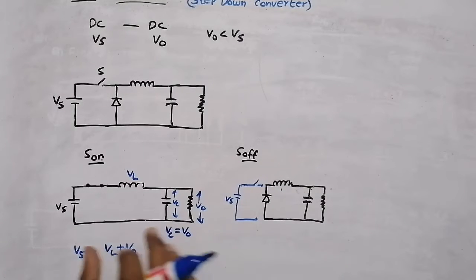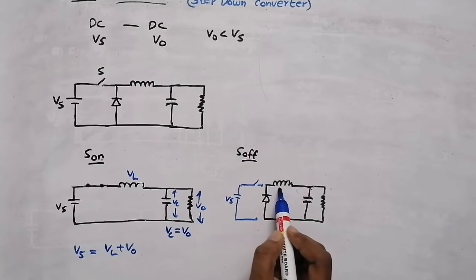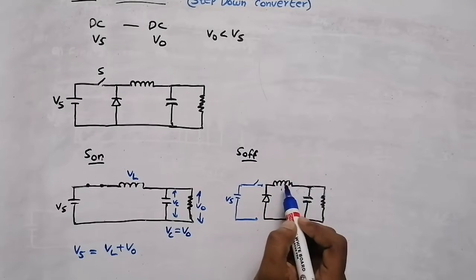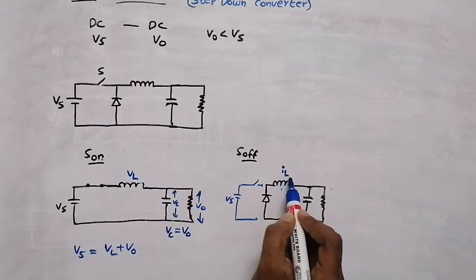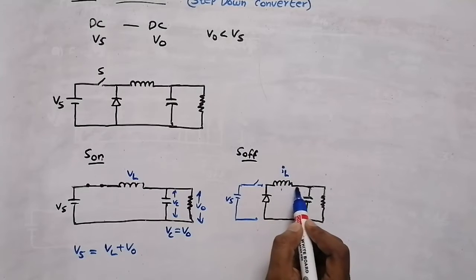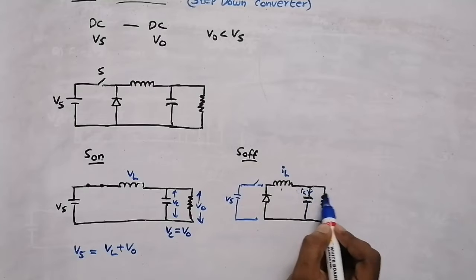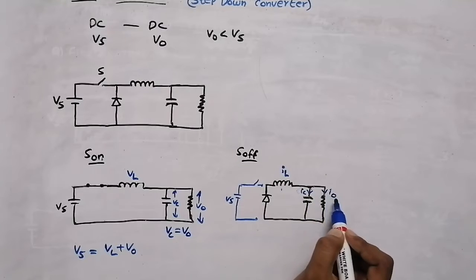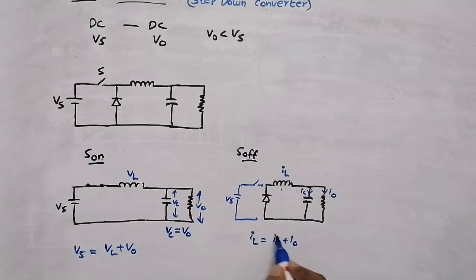From the Mode 2 circuit, the inductor has stored energy and releases it, acting as a current source. The inductor current IL flows through the capacitor (IC) and to the output (I0). So the equation is: IL = IC + I0.